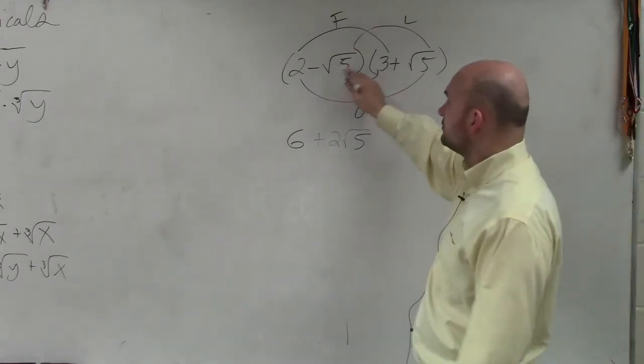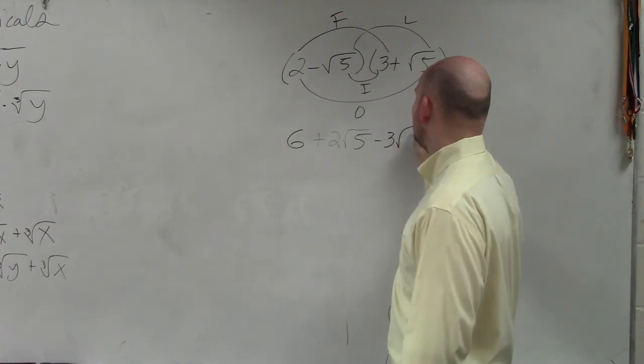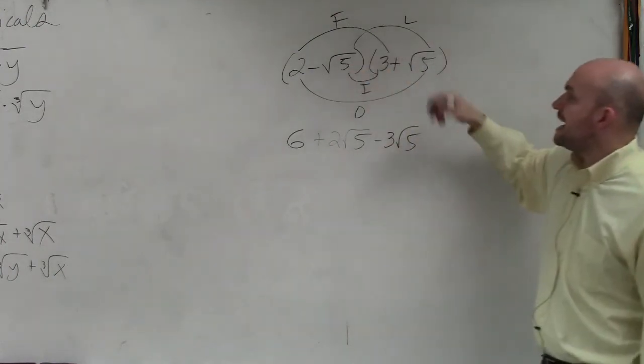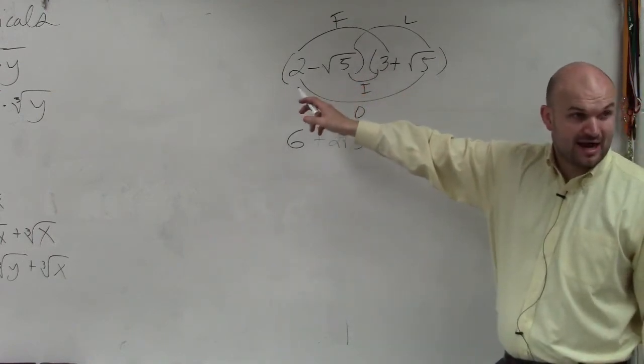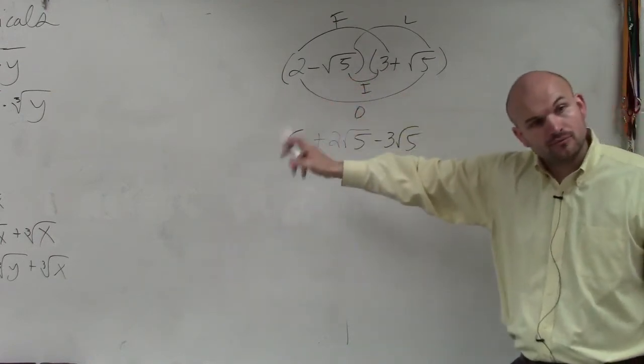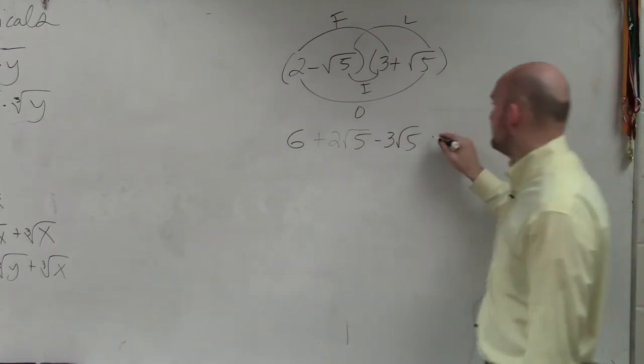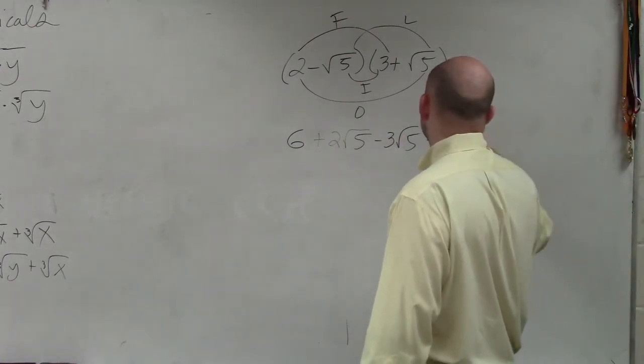Then we have the inner, which is the same process. And the last is negative square root of 5 times square root of 5. Now I have the same roots, so I can multiply them. That's going to be negative square root of 25.